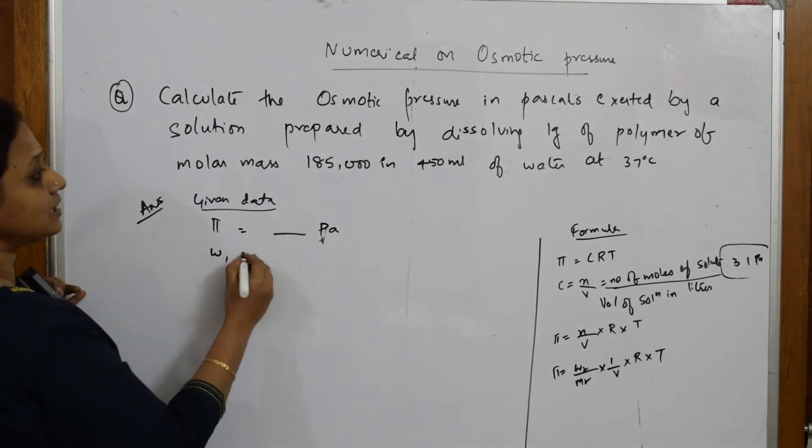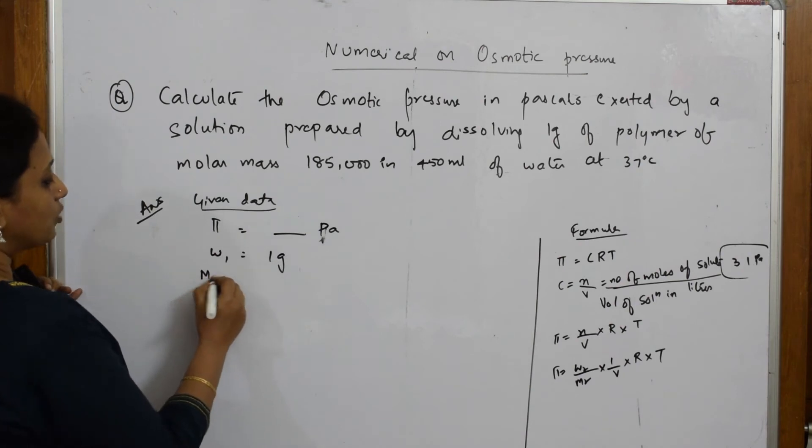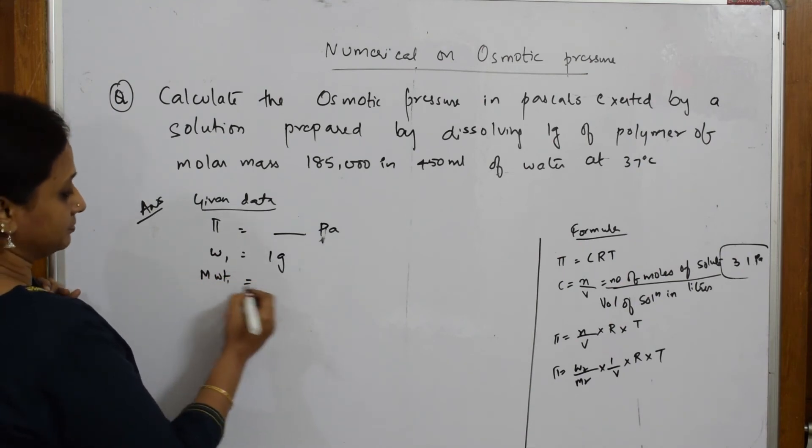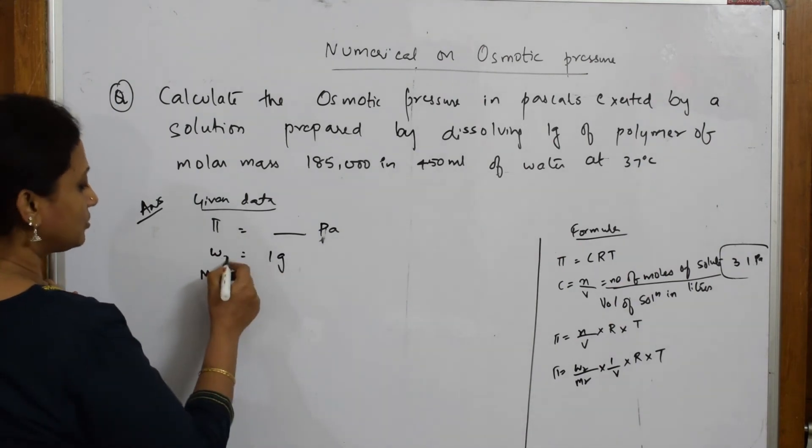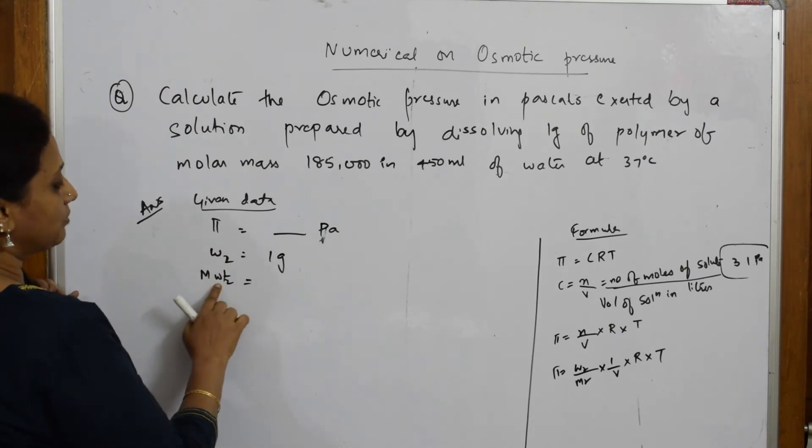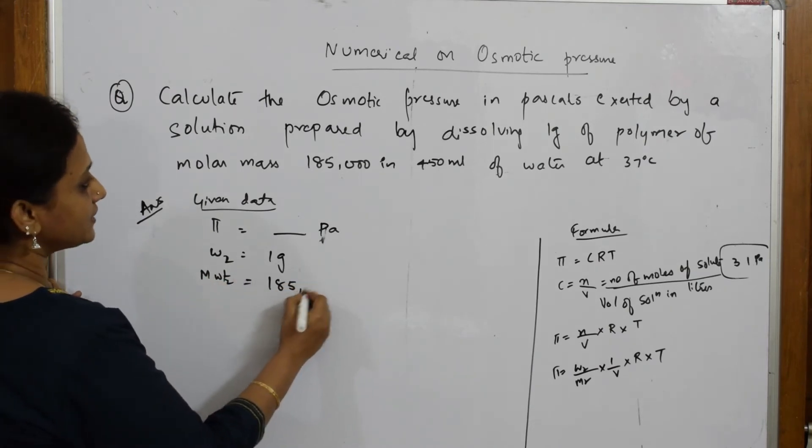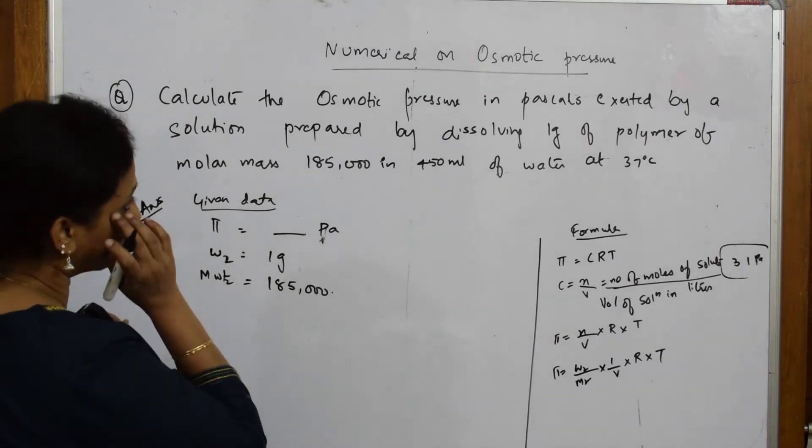What did they say? W2 is 1 gram, it seems. Molecular weight for this. I took W2. Here also do not. Molecular weight is 185,000. This is also over.